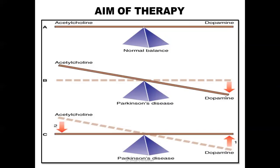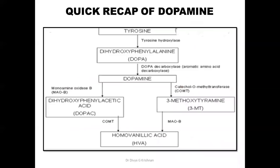So whenever we look at drugs for Parkinson's disease, we will see either drugs that increase dopaminergic activity or drugs that decrease the cholinergic activity.